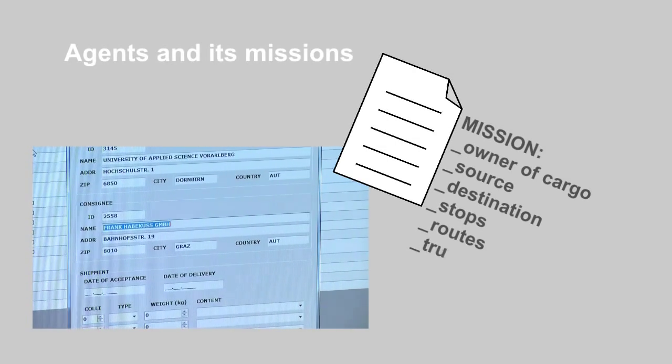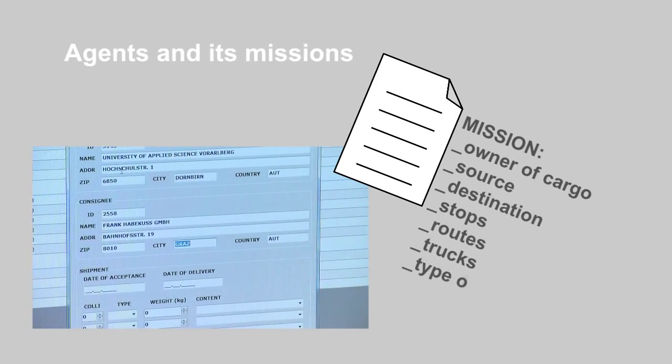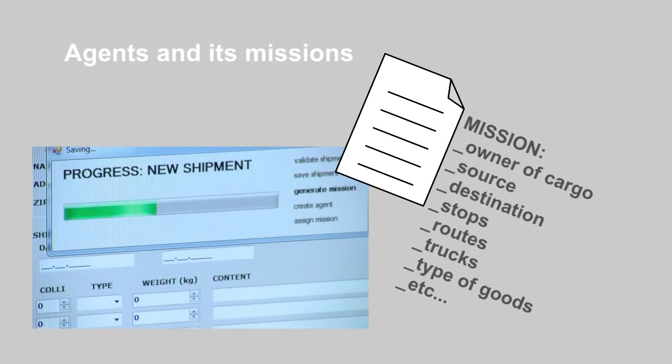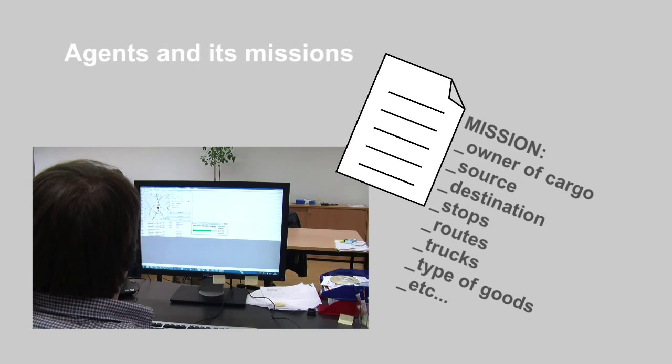This includes the owner of the cargo, the cargo's source and destination, intermediate stops, routes and trucks, the types of goods, etc.